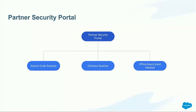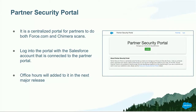One last thing: since we have two separate portals for partners, we want to combine everything together and we're going to be releasing a Partner Security Portal in about a month from now. It will have both the Source Scanner portal and the Chimera portal, and we'll be adding more and more features for partners, including office hours. It's a centralized portal — you can log in using your partner login. Keep a lookout for that; you'll get a notification about it in roughly a month.